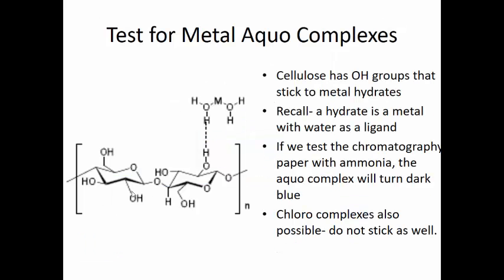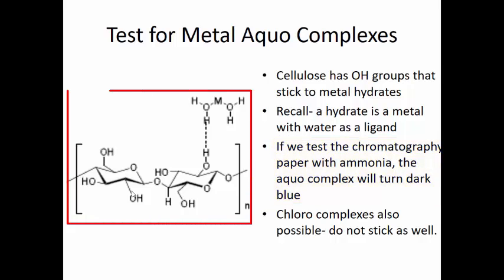Now we're going to test to see which of these were actually hydrates. We already talked about cellulose grabbing onto those hydrates. When we look at the test for metal aqua complexes, we're going to expose that chromatography paper to ammonia and see if any of those spots actually change colors. If it's a hydrate, it's going to move a lot slower.